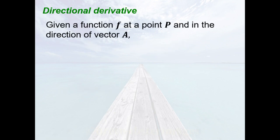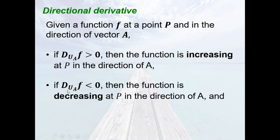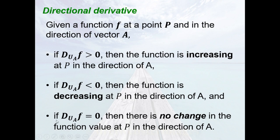Here are some remarks. Given a function f at a point p and in the direction of vector a: if your directional derivative is positive, the function is increasing at p in the direction of a. If your directional derivative is negative, then the function is decreasing at p in the direction of a. And if your directional derivative is equal to 0, then there is no change in the function value at p in the direction of a.